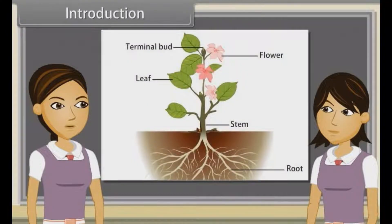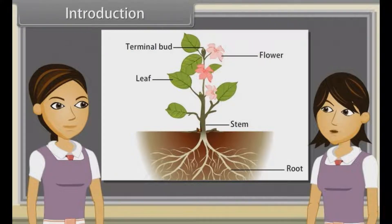When we observe a plant, we see that every plant has roots, stem and leaves. Plants also have flowers and roots. We have already discussed characteristics, types, modifications and functions of roots, stems, leaf and inflorescence. Now we will study flowers.